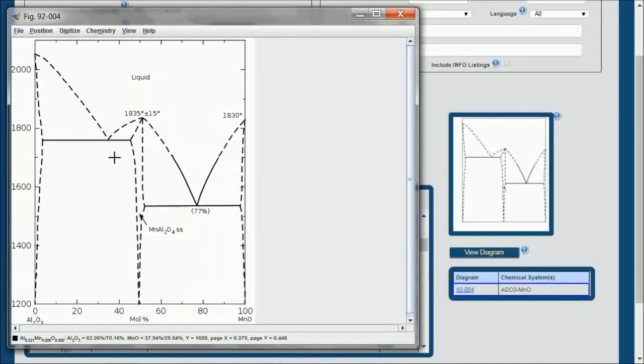Even more useful is the special cursor. I hold down the shift button and you see a new cursor pops up right at that eutectic point that we are interested in. And so if you look at the bottom, you can see very plainly that at the eutectic point is 65% alumina, 35% by mole manganese oxide, and the temperature value is 1761 degrees. Pretty slick, right?